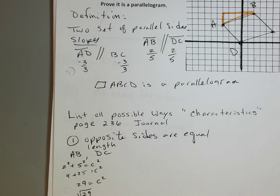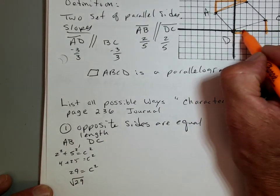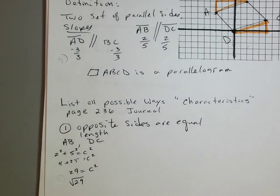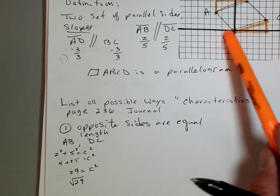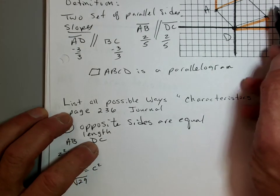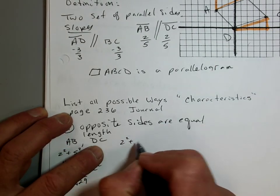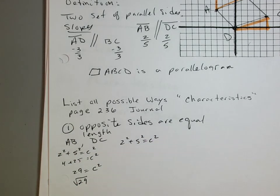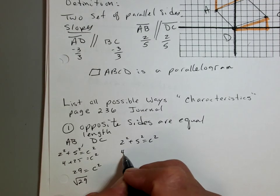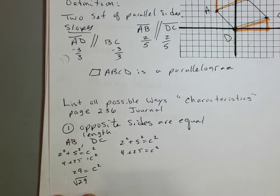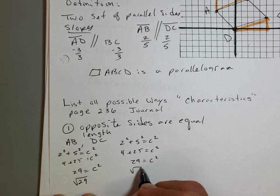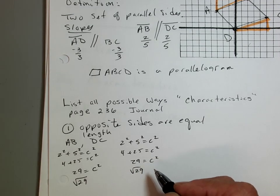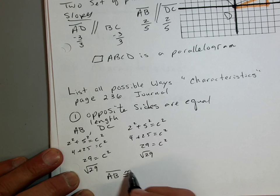So I should get the exact same length for DC. I'll create another right triangle. Using the Pythagorean Theorem: A squared plus B squared equals C squared to find the length of AB. For DC, it's going to be the same thing — 2 squared plus 5 squared equals C squared. Same right triangle, so we get 4 plus 25 equals C squared, 29 equals C squared, so the square root of 29. So I know AB is congruent to DC.